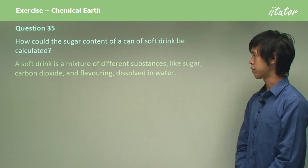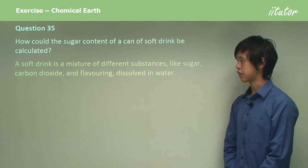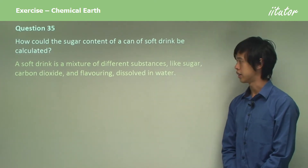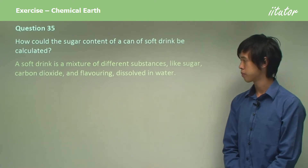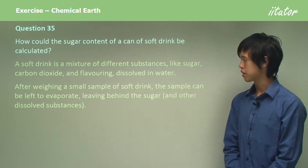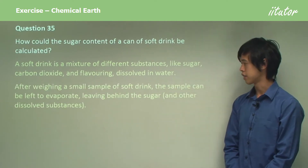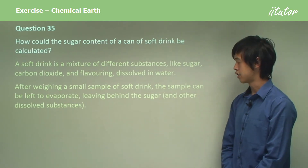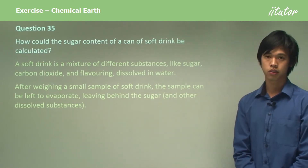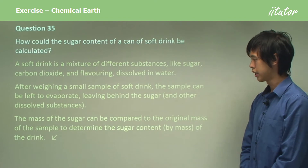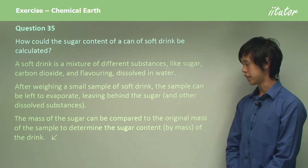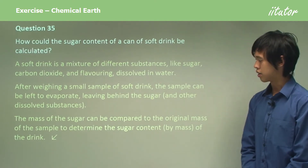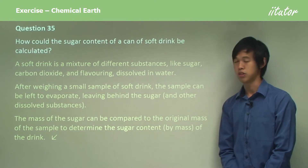Well, a soft drink is a mixture of different substances, like sugar, carbon dioxide, flavouring, and they're all dissolved in water. After weighing a small sample of soft drink, the sample can be left to evaporate, leaving behind the sugar and other dissolved substances. The mass of the sugar can then be compared to the original mass of the sample to determine the sugar content by mass of the drink.